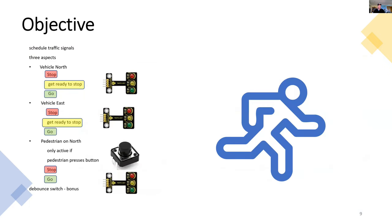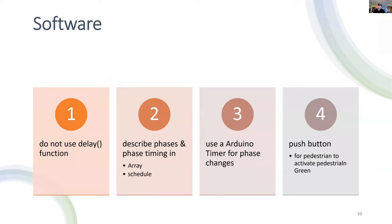The objective is quite straightforward. I've got three aspects: one for vehicles facing north with stop, ready to stop and go. In the opposite direction we've got vehicles going east and we've got the pedestrian on the northern aspect. For the pedestrian we've only got stop and go. The pedestrian is only activated if they press the button. As a bonus I want to debounce the switch. In real life, when you press a button it doesn't just instantaneously make a connection. It might do that gradually and bounce before it settles down.